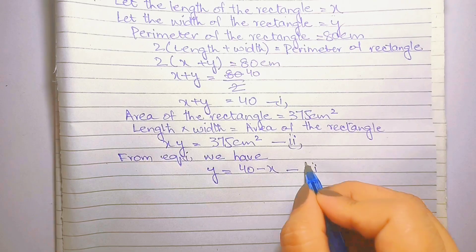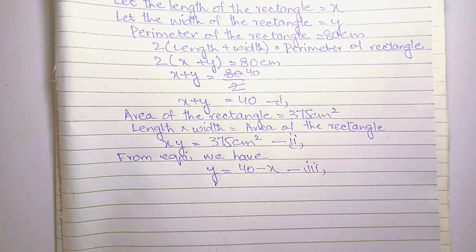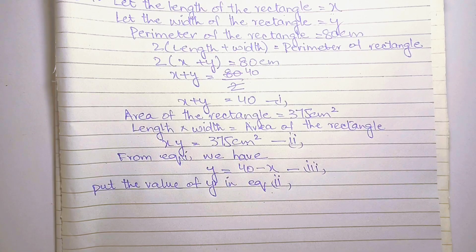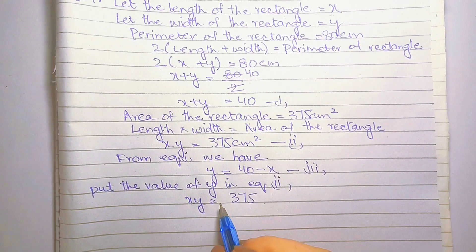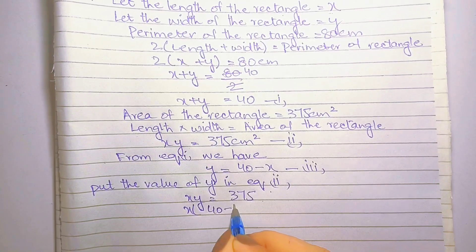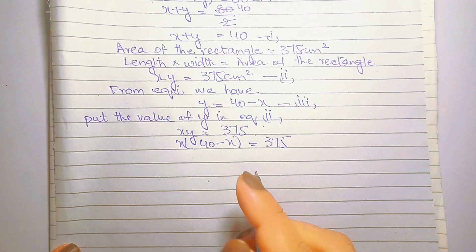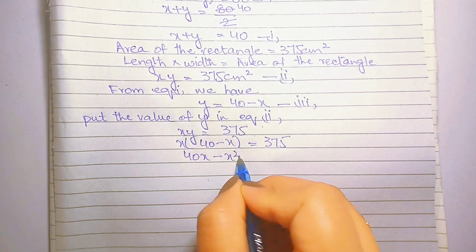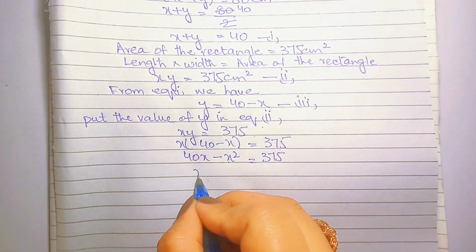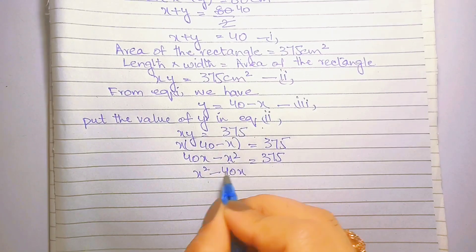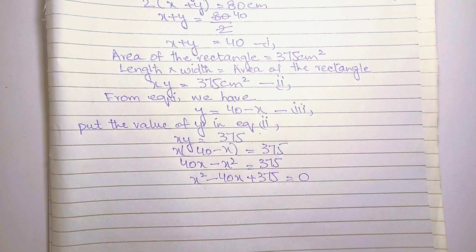Equation 1 से y की value: y = 40 minus x — equation 3। y की value को equation 2 में put करते हैं: x(40 minus x) = 375, तो 40x minus x square = 375। Rearranging: x square minus 40x plus 375 = 0।